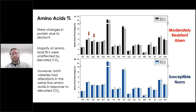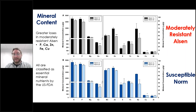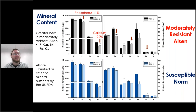When looking at mineral content, again both varieties had significant decreases. However, the mildly resistant Elsin had far more and greater magnitude losses: 11% loss of phosphorus, 22% loss of calcium, 30% loss of zinc, 21% loss of iron, and a 25% loss of copper. From our perspective, this is rather concerning because all of these are classified as essential mineral nutrients — very concerning for the consumer.